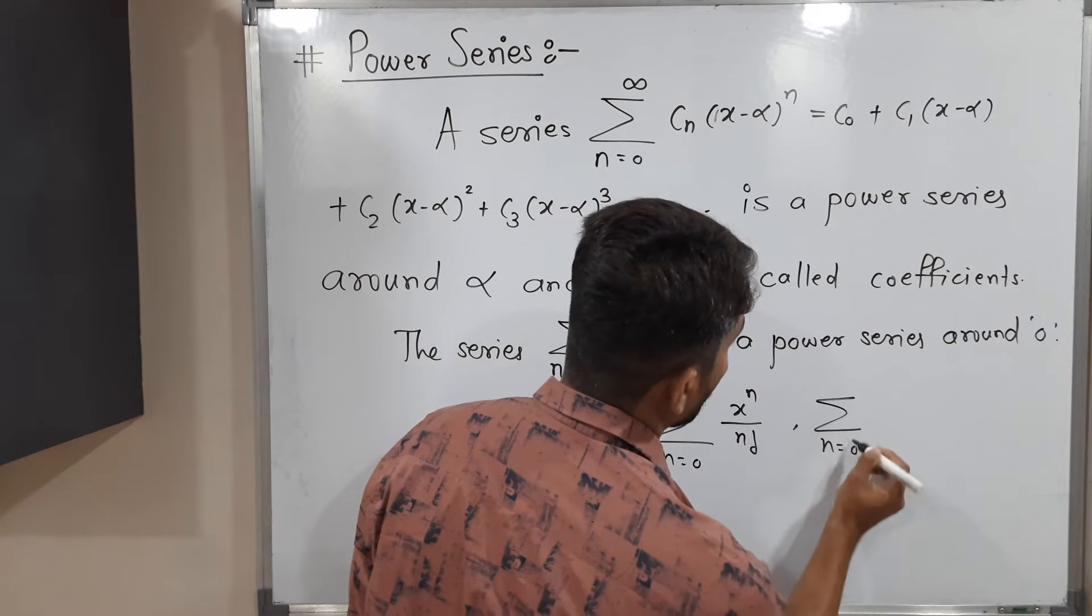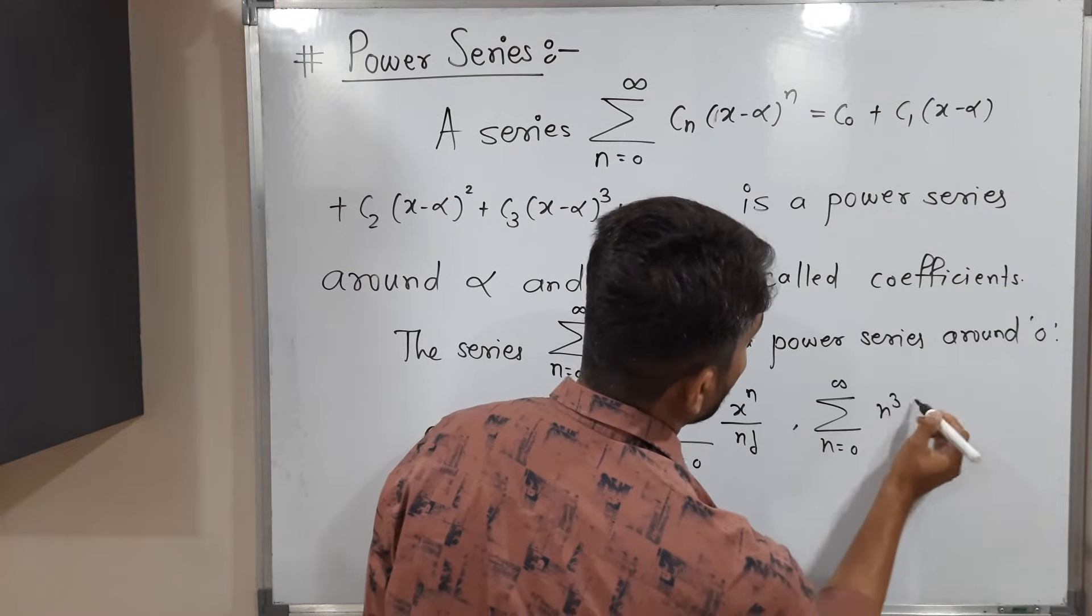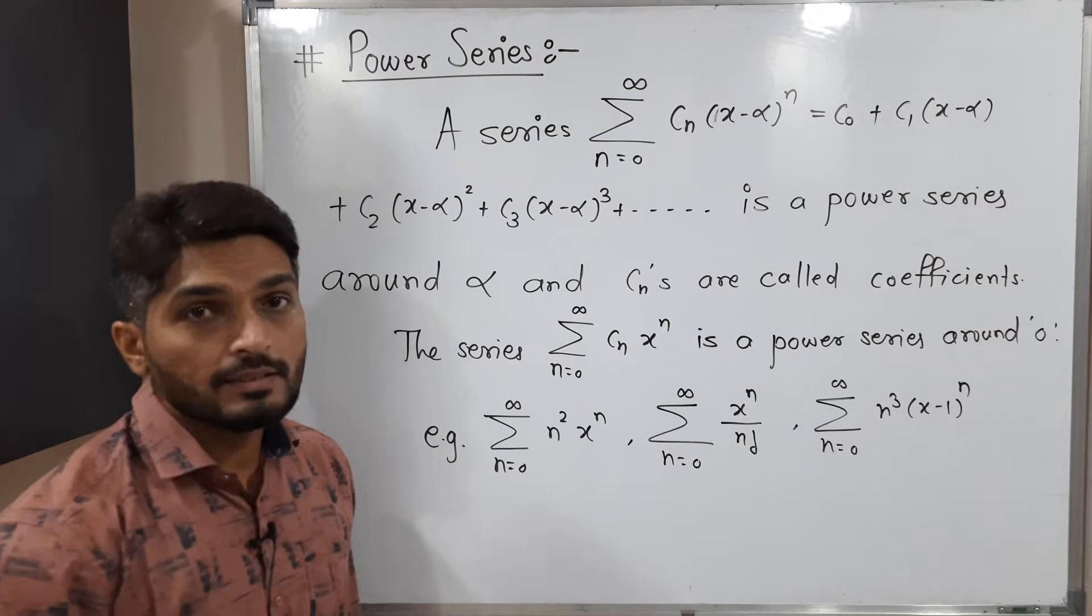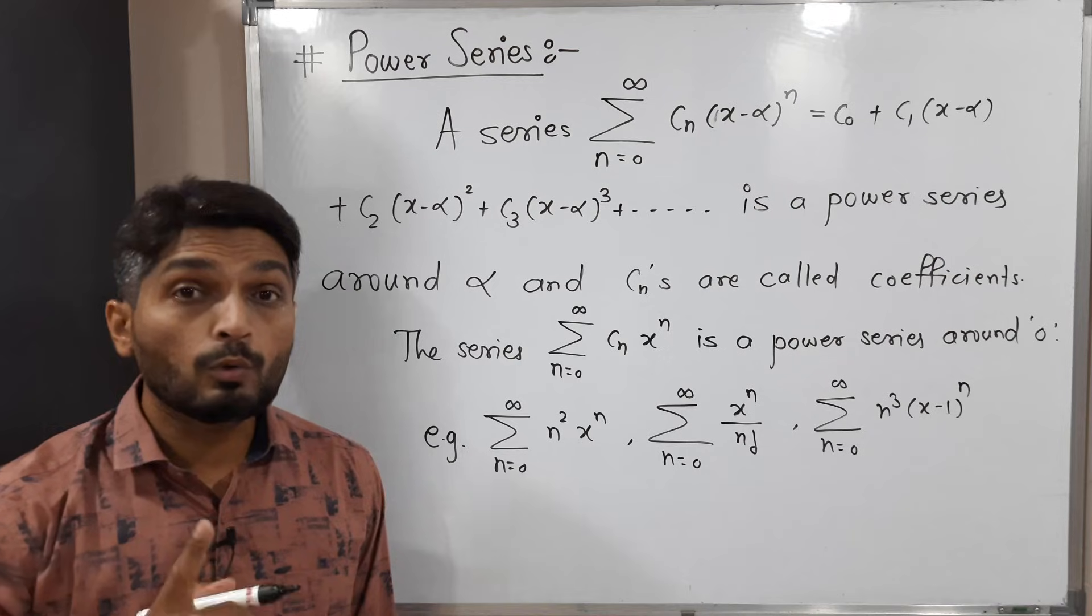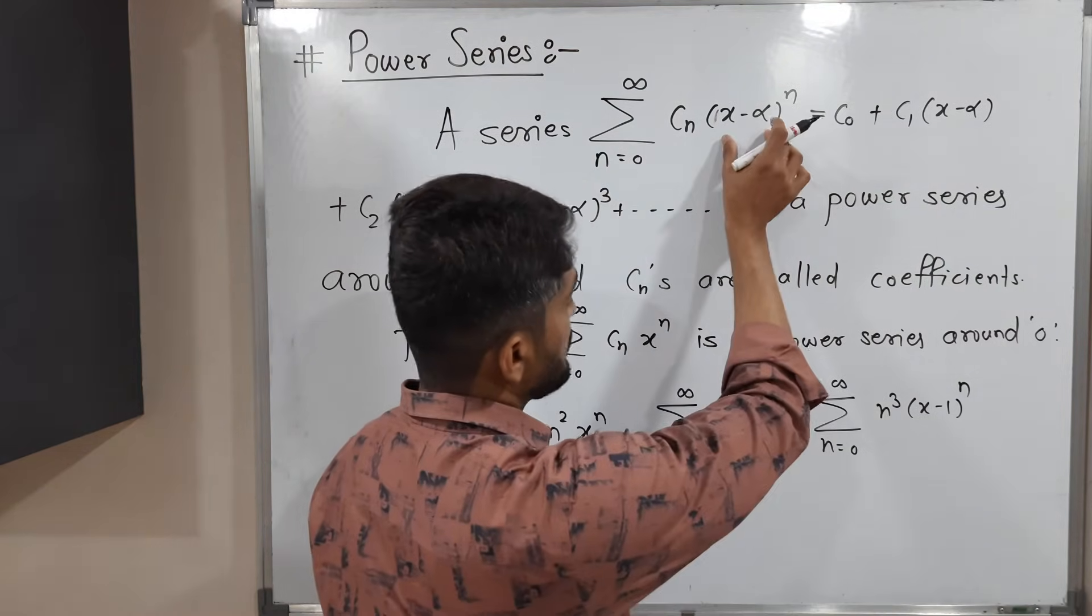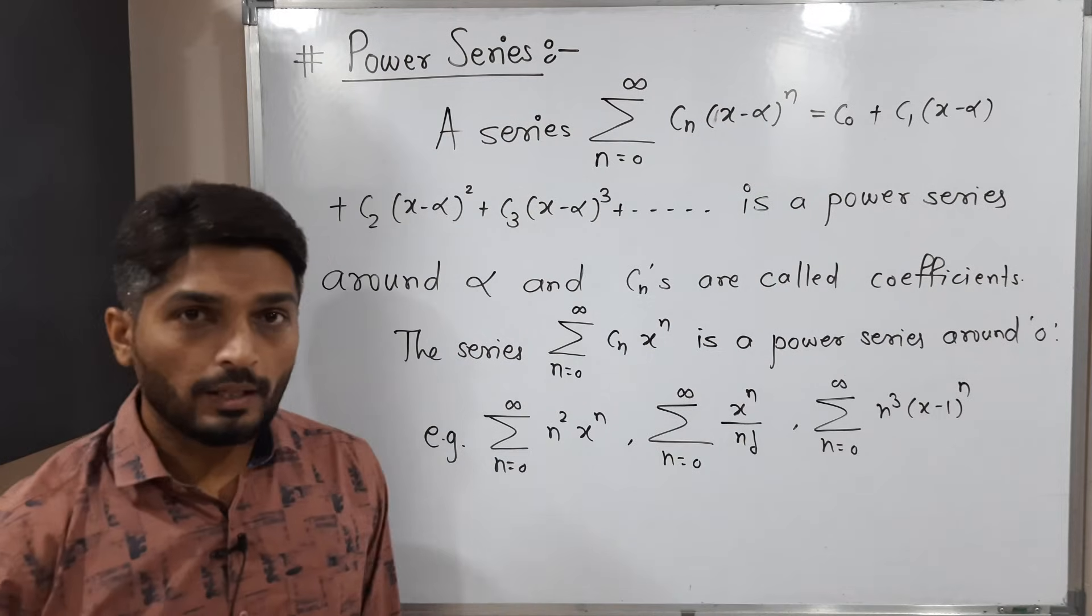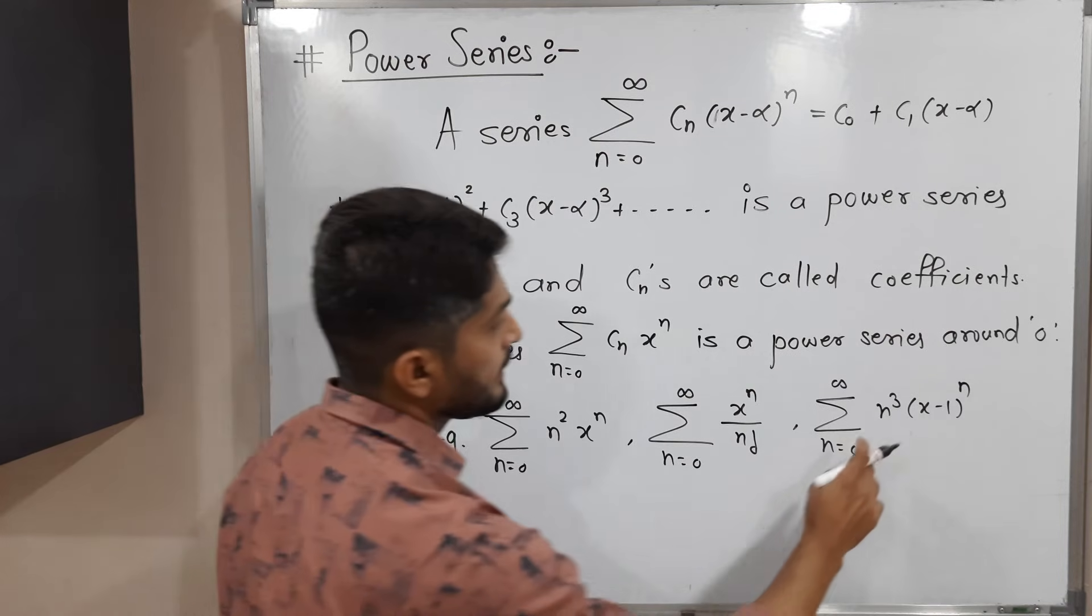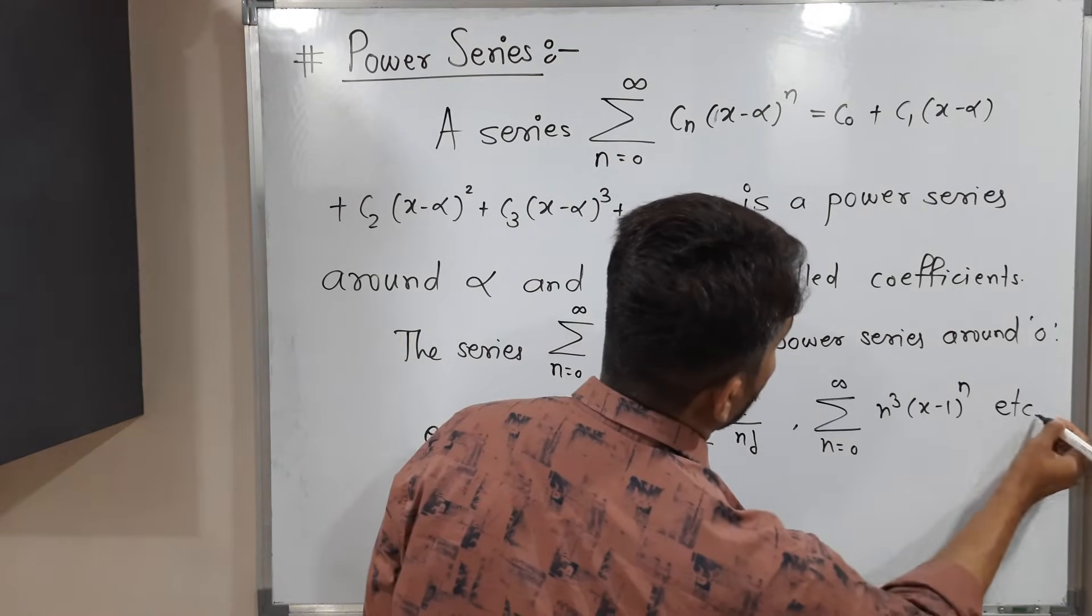Summation, n running from 0 to infinity, n cube times x minus 1 raised to n. You can easily see this is a power series around 1, since we have this bracket x minus alpha. If you compare with this one, the value of alpha is 1. So that's why it's a power series around 1, and cn is n cube. So these are examples.